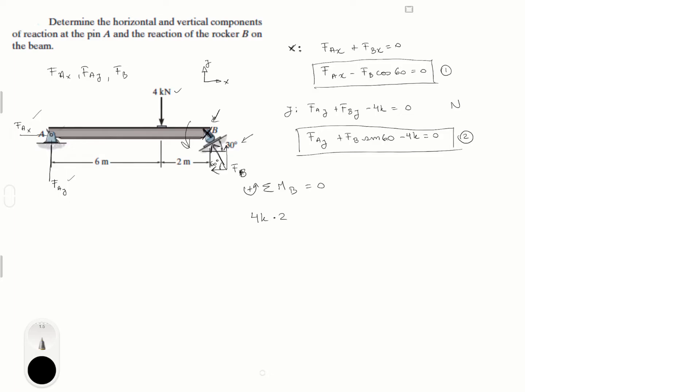Then the F of A Y is creating a clockwise motion, so that means it's a minus F of A Y. And the distance is 8 meters, so times 8. And that is equal to 0. So if we solve for F of A Y, you get that this is equal to 1K.